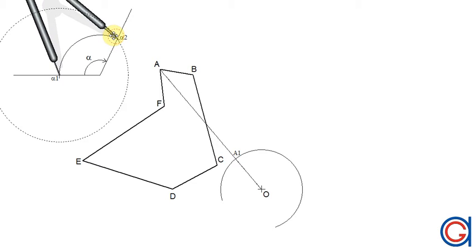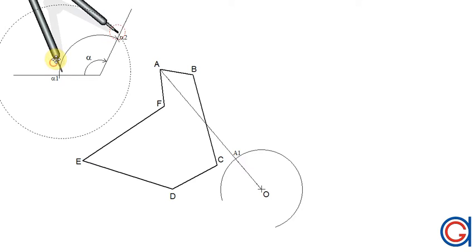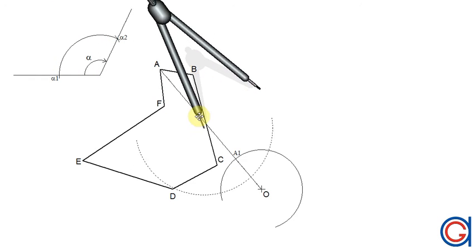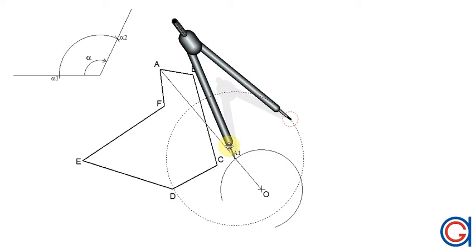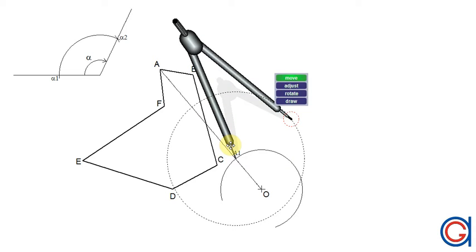Now setting the compass on alpha 1 and with a radius alpha 1 to alpha 2, we are going to transport this onto the large arc from point A1. Setting the compass on point A1 and scribing an arc to the right, we obtain a new point which we will call A2.